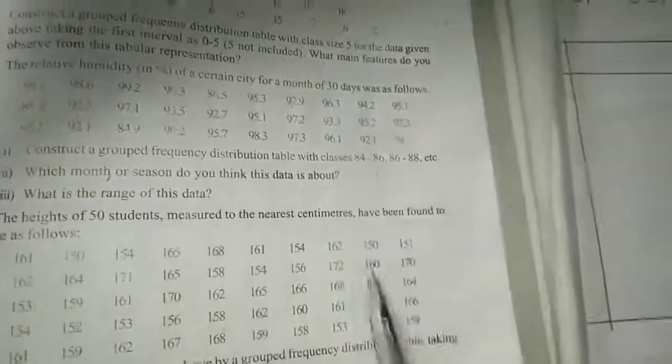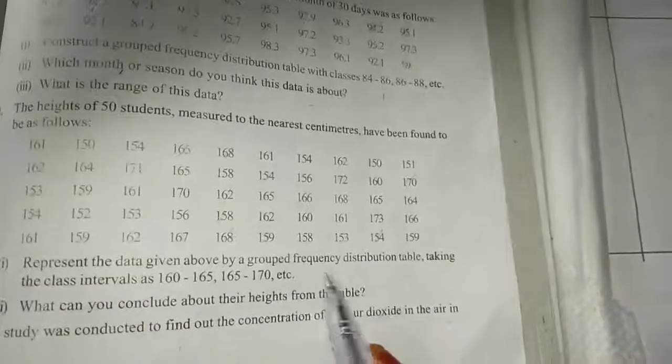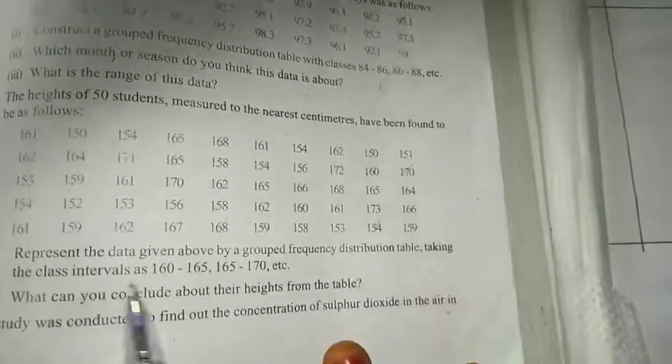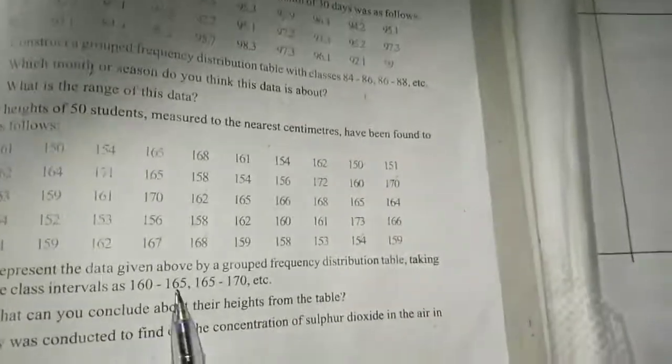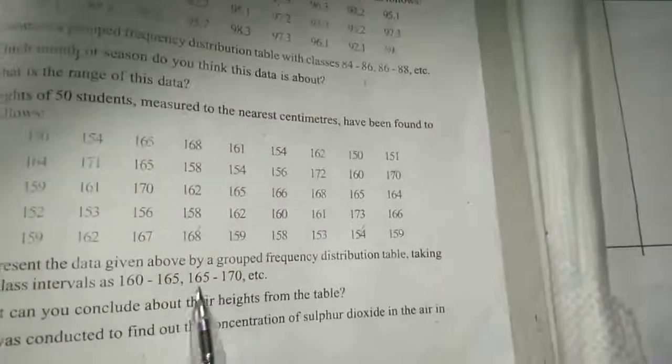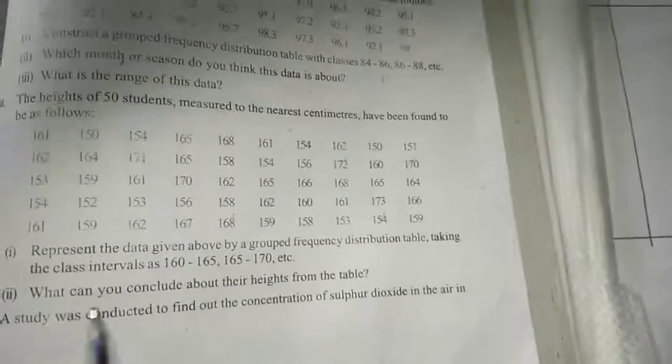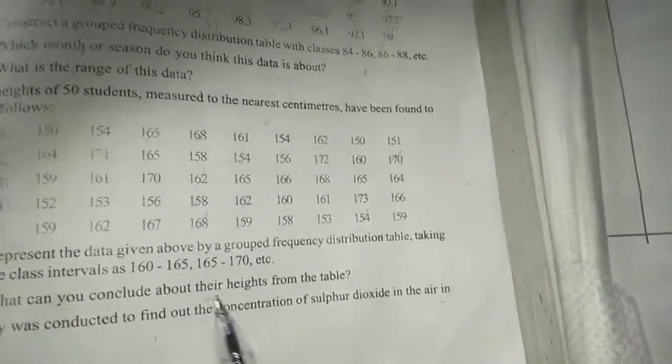50 students' heights are given. Represent the data given above by a grouped frequency distribution table taking the class intervals as 160 to 165, 165 to 170, etc. Here also 165 will not be included in the next interval, only 165 will be included.